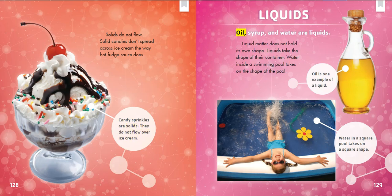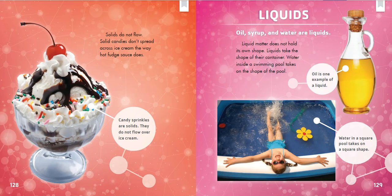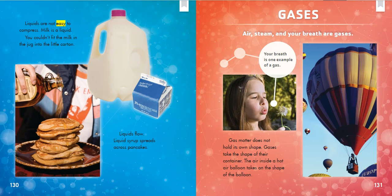Liquids. Oil, syrup, and water are liquids. Liquid matter does not hold its own shape — liquids take the shape of their container. Water inside a swimming pool takes on the shape of the pool. Oil is one example of a liquid. Water in a square pool takes on a square shape. Liquids are not easy to compress. Milk is a liquid; you couldn't fit the milk in the jug into the little carton. Liquids flow — liquid syrup spreads across pancakes.